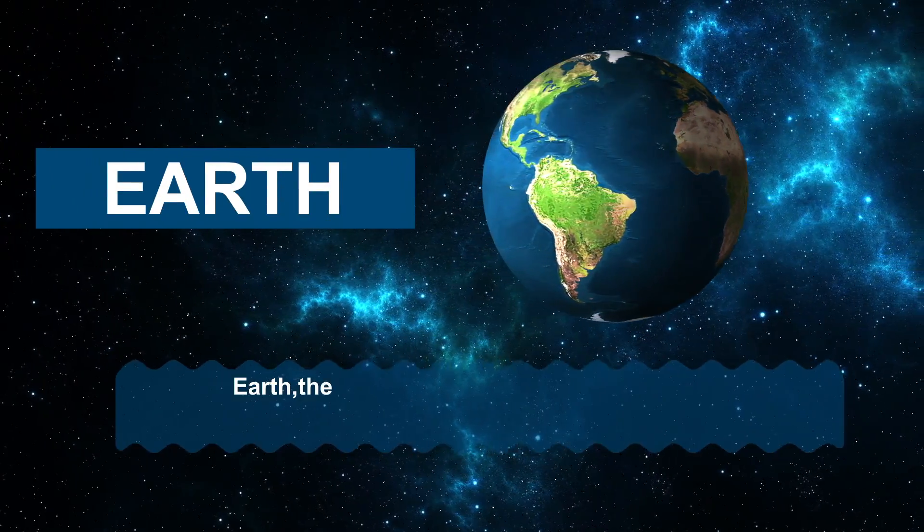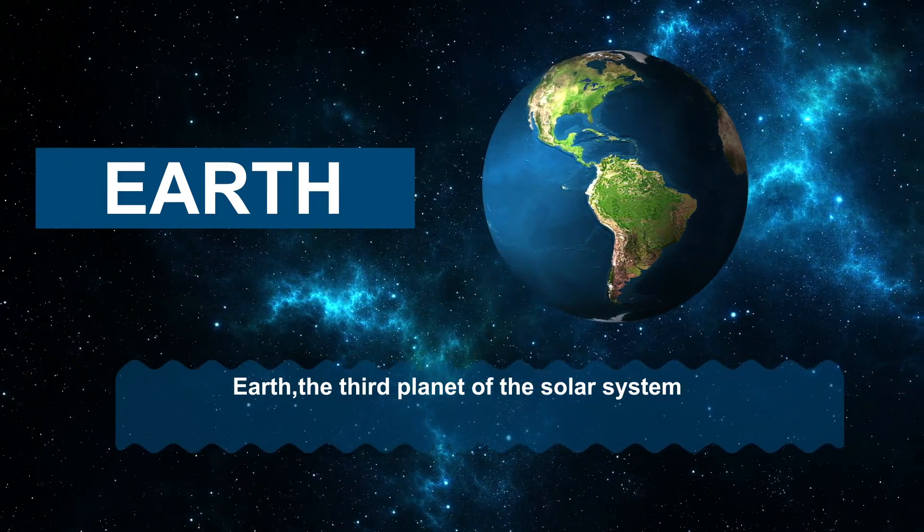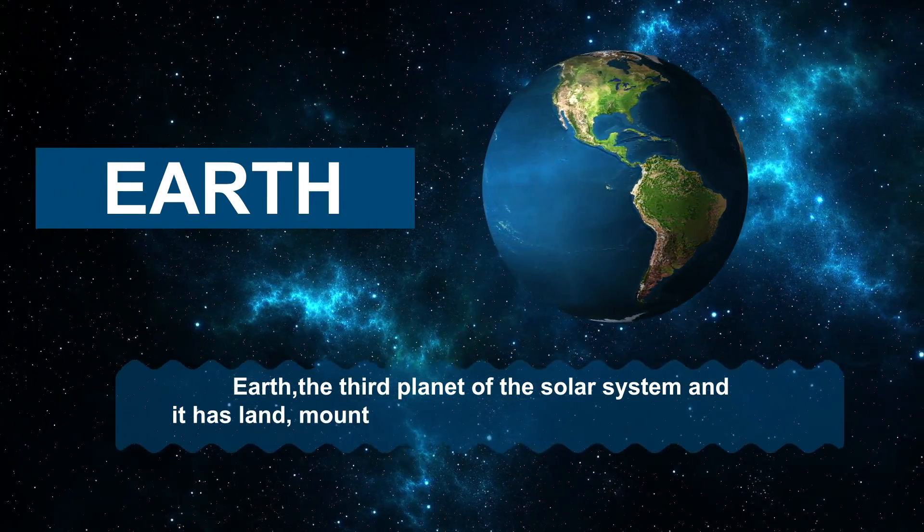Earth, the third planet of the Solar System, has land, mountains and lots of water. We live on Earth.